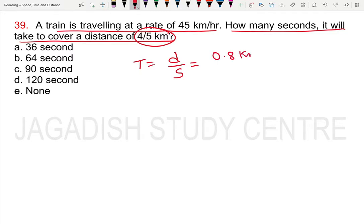So we have 0.8 kilometers divided by speed, which is 45 kilometers per hour. This gives us 0.8 by 45 hours.